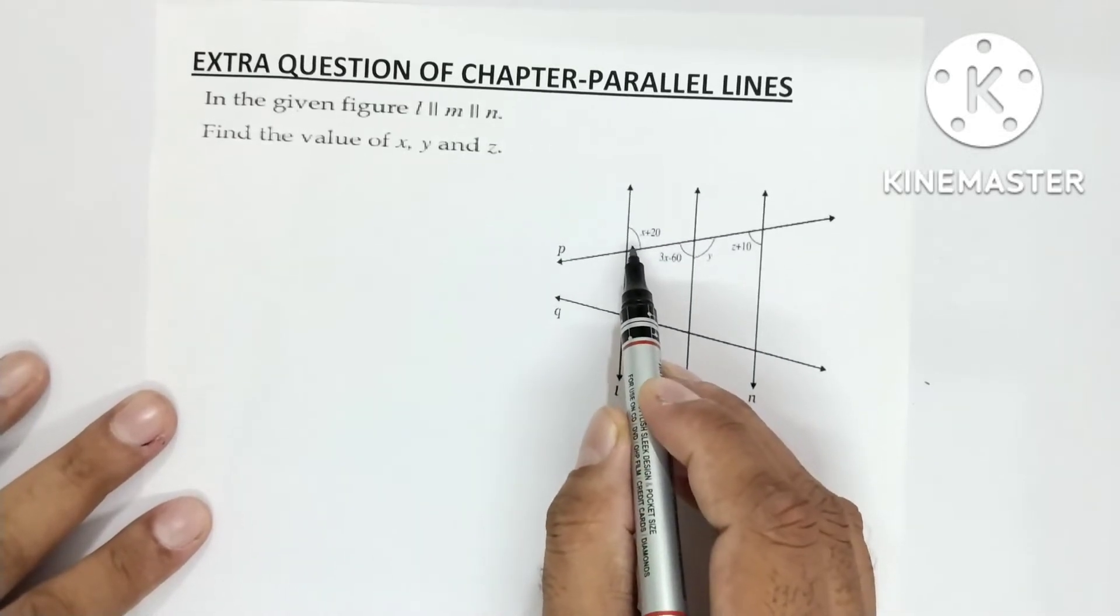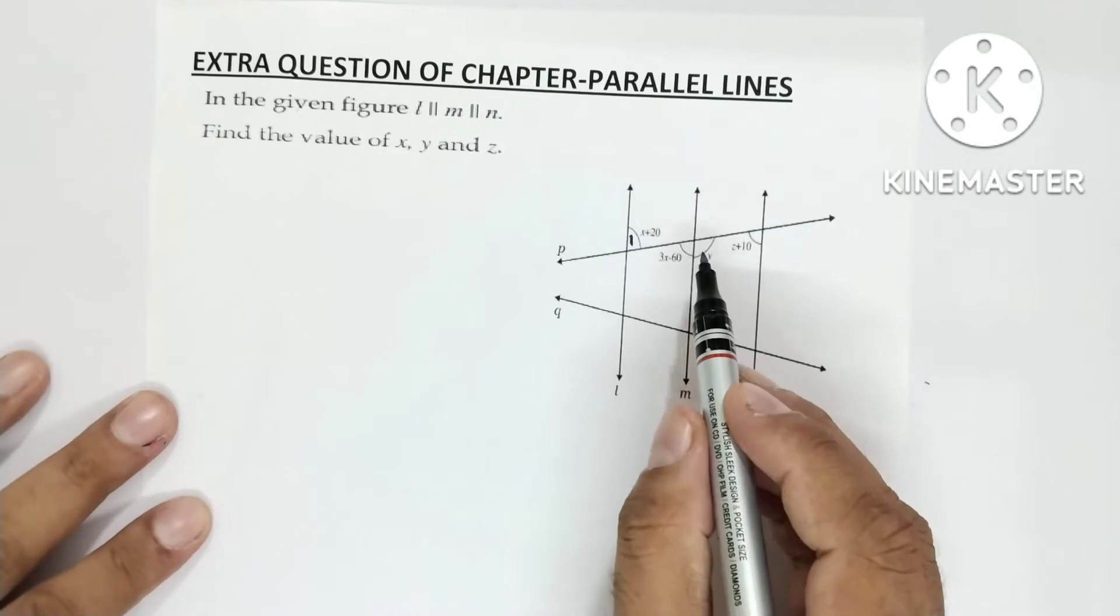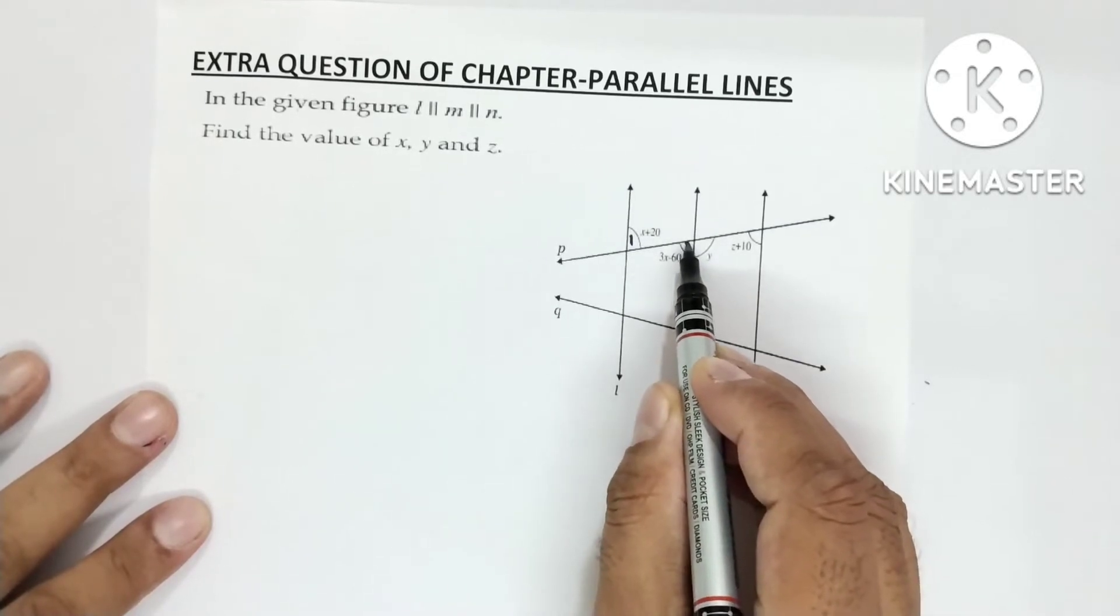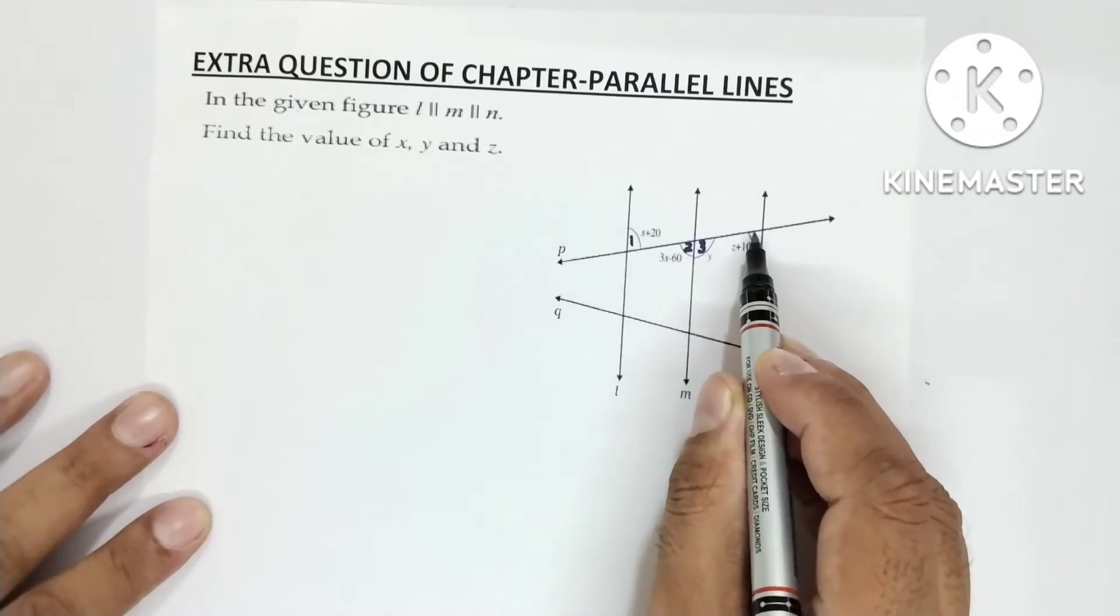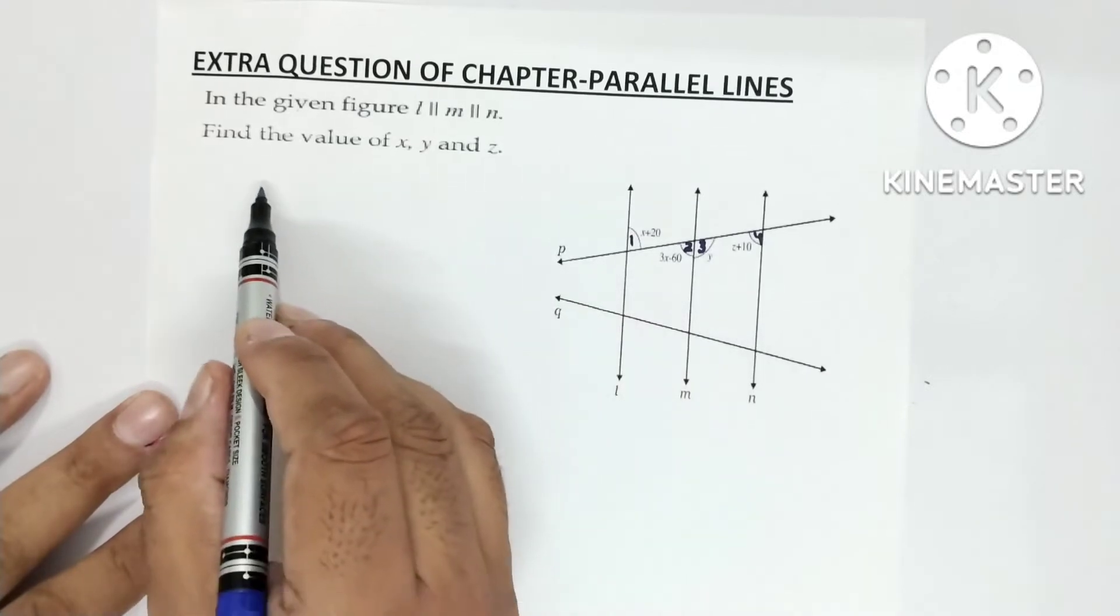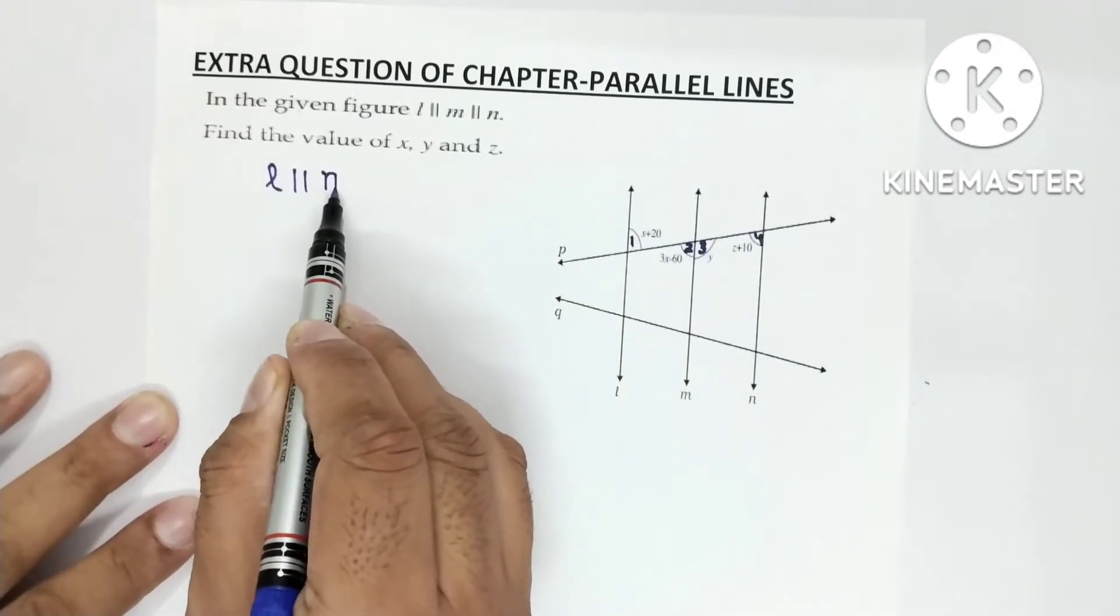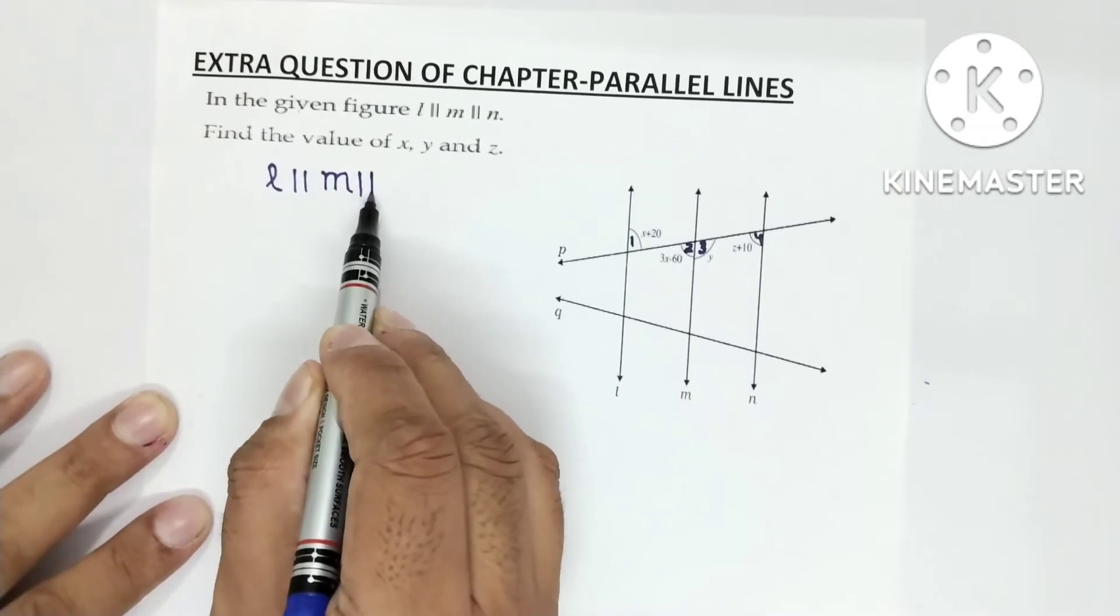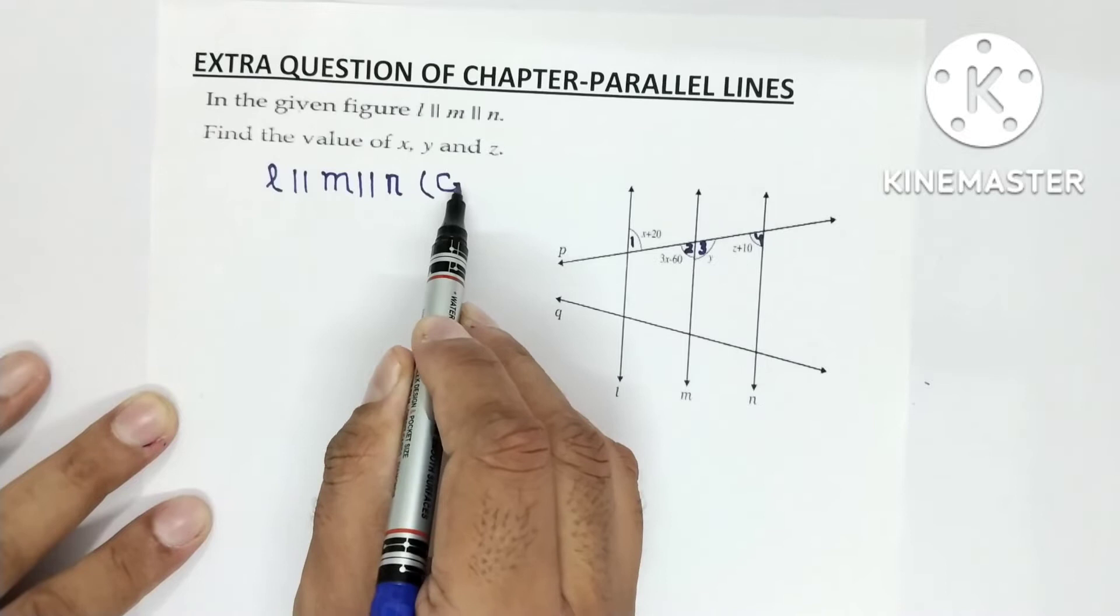So you can see here, here I can write angle 1. And here I can write angle 2. Here I can write angle 3. And here I can write angle 4. So, first we will write L is parallel to M is parallel to N. This is the first line to be written in the solution. It is given.